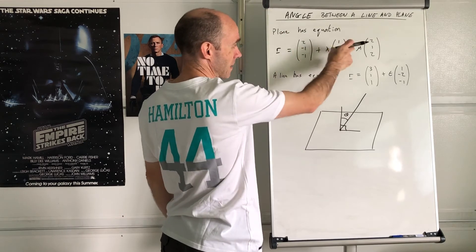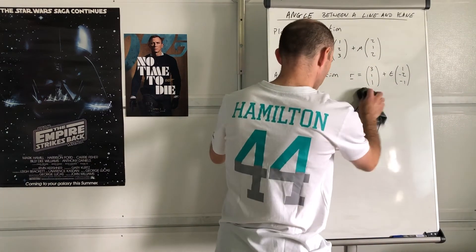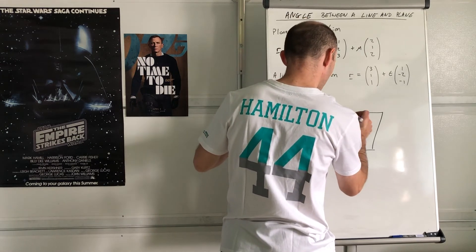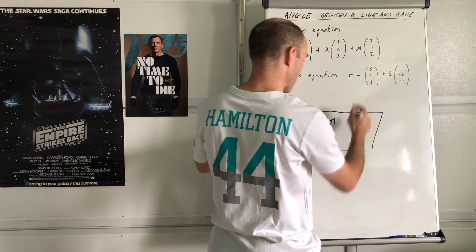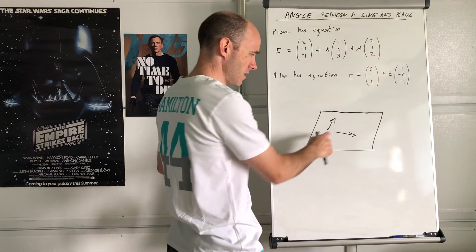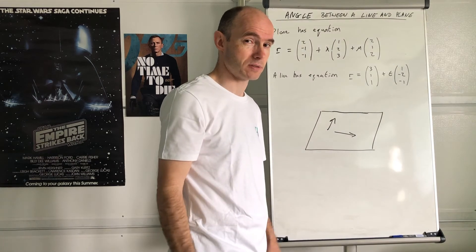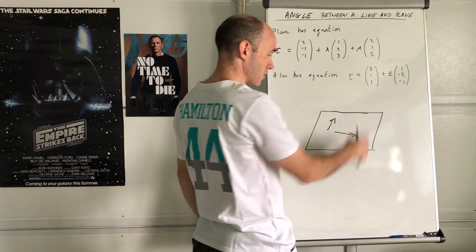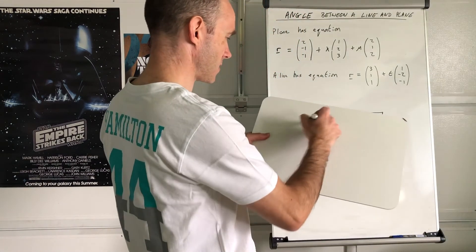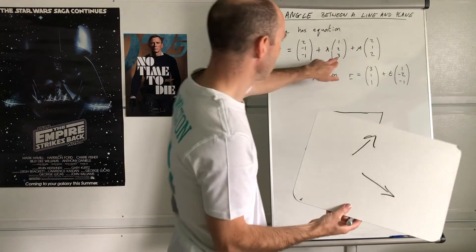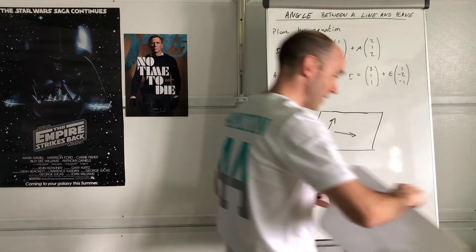For the vector equation of a plane, we have two direction vectors within the plane. To find the normal - a vector perpendicular to both - we use the vector cross product of those two direction vectors. The two direction vectors from the plane equation are (1, 2, 3) and (2, 1, 2). Their cross product will give us the normal to the plane.